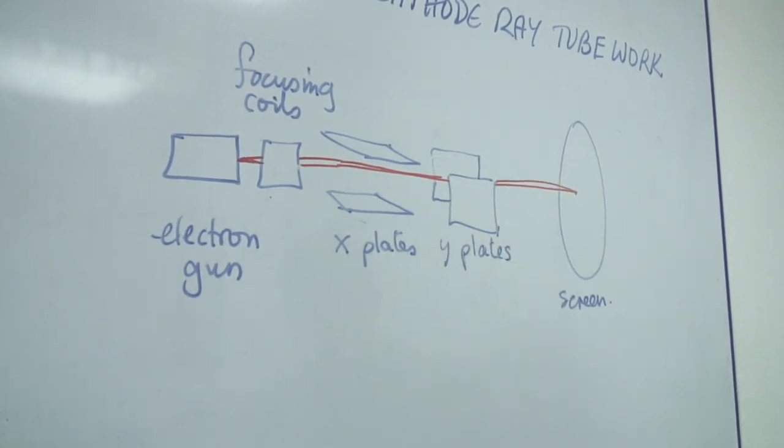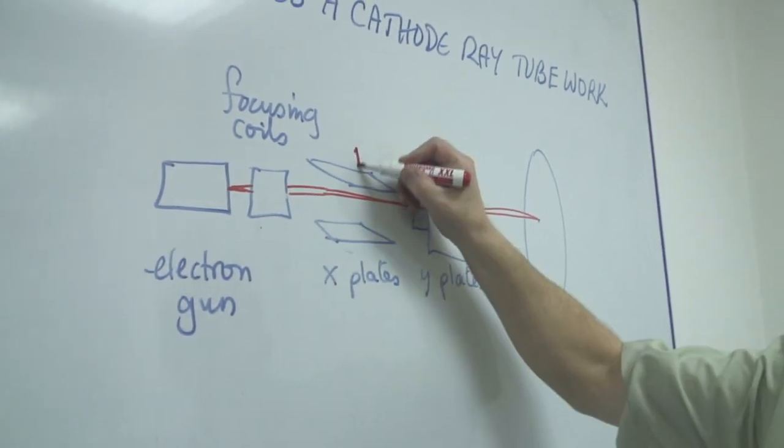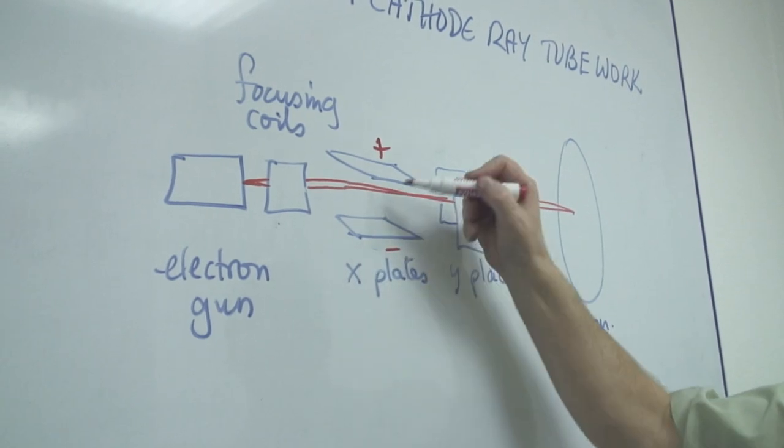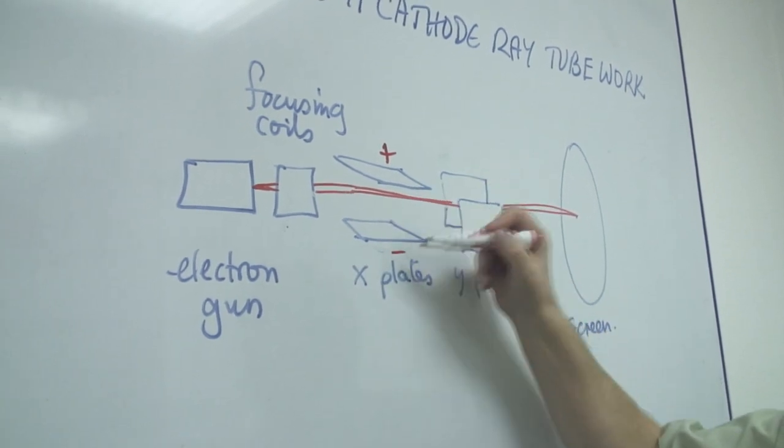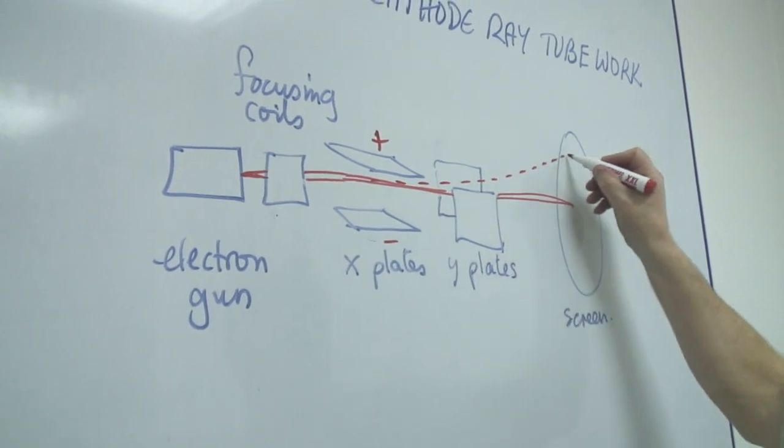The X plates, if they're charged, that is if you charge the top one positive and the bottom one negative, then you will find that the negative particles of course are repelled by the negative and therefore the actual beam will bend upwards.